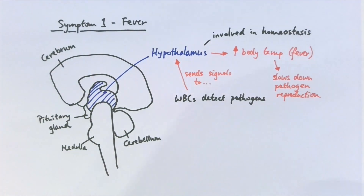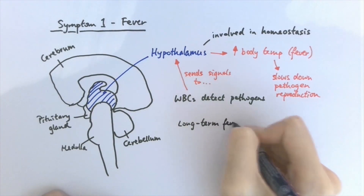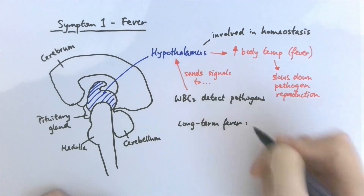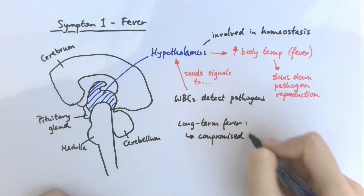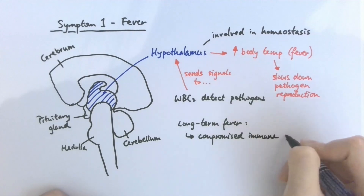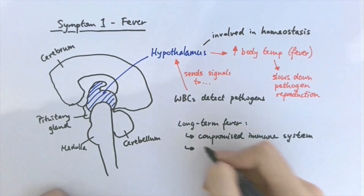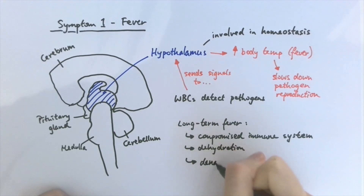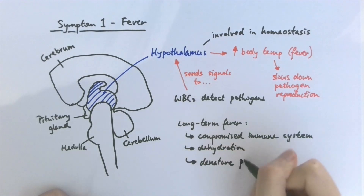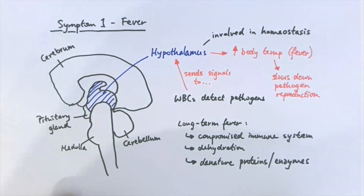Having a fever is a sign of infection, but also a sign that your immune system is working properly. The problem is when you have a really high fever for a long time, as it may mean your immune system is compromised and could lead to complications such as dehydration. Additionally, animal proteins such as enzymes could denature at higher temperatures, disrupting many essential internal reactions.